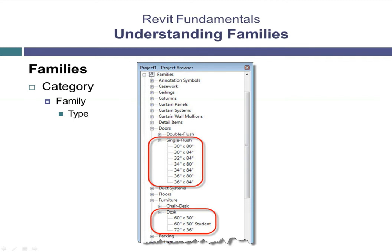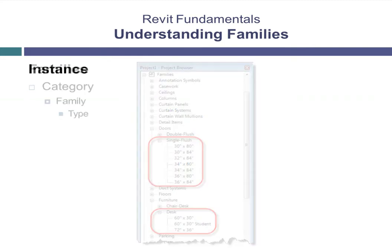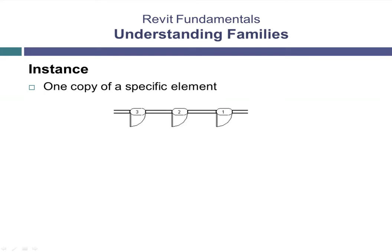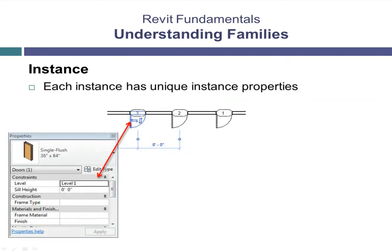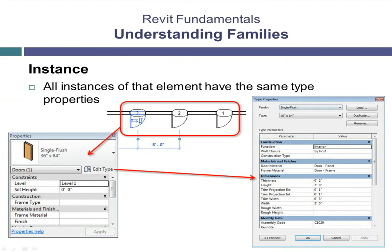Types do not have to vary just in size — there can be other parameters that vary from type to type. Family types can be created or deleted as needed within a project. When you place an element into your Revit model, you create an instance of that element. So you could place 20 different 36-inch by 84-inch single flush doors, and each would be an instance of that specific type. Each instance has its own unique instance properties, but each shares the same identical type properties. If you change an instance property such as sill height, only that one instance is affected. But if you change a type property such as door width, every instance of that door immediately changes.